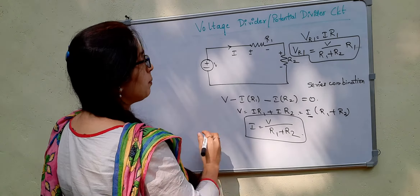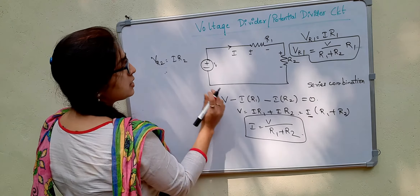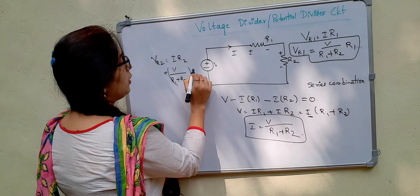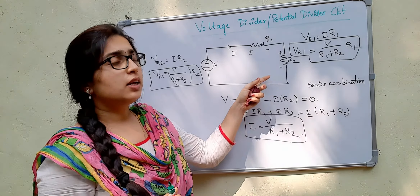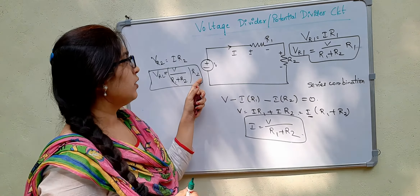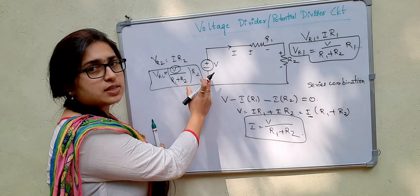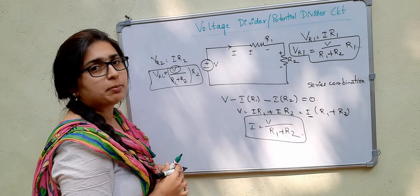Similarly, if we have to find the voltage drop across R2, V R2 will be equal to I into R2. Substituting the value of I, we get V divided by R1 plus R2, into R2. From this, we can conclude that the voltage drop across any resistor is equal to the ratio of that particular resistance across which the voltage drop has to be measured, divided by the equivalent resistance, multiplied by the source voltage V.